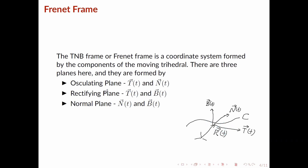Next we have the rectifying plane. This is the plane where the tangent vector and the binormal vector lie on. Lastly we have the normal plane — this is the plane where the normal vector n and the binormal vector lie.